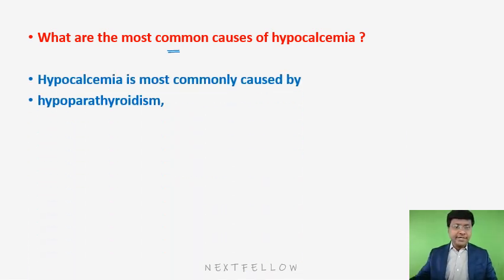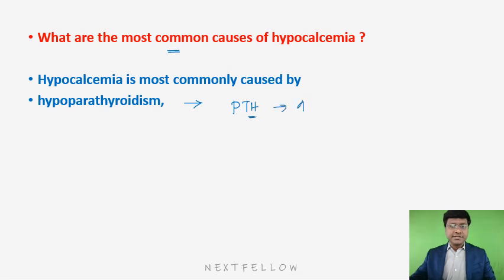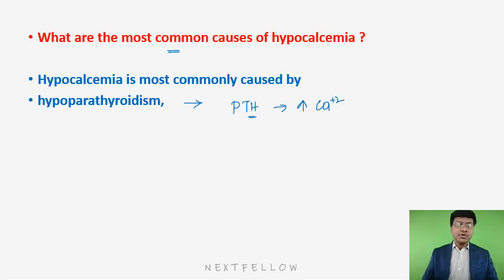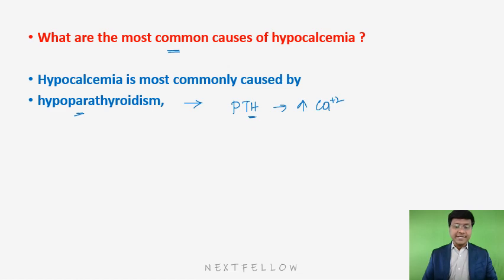We have a very important endocrine disorder: hypoparathyroidism. Parathyroid hormone is the one which increases calcium levels by increasing osteoclastic activity. So when there is no parathormone — that is, hypoparathyroidism — the osteoclastic activity is absent, and that will make the individual land up in hypocalcemia.